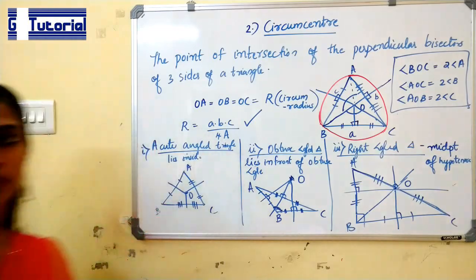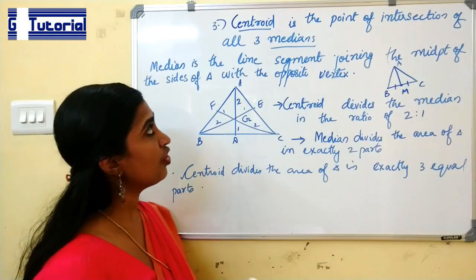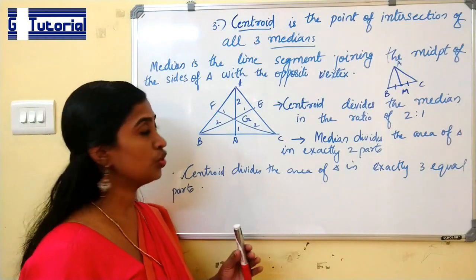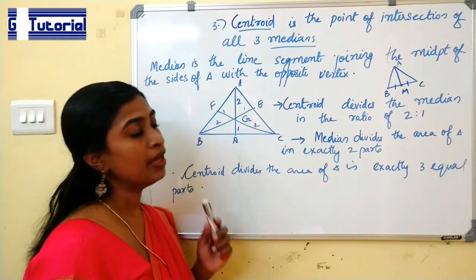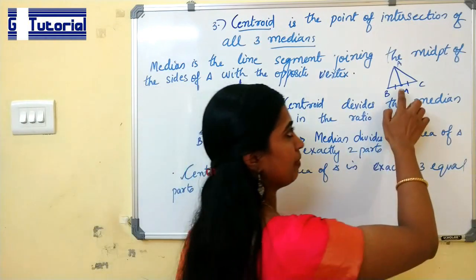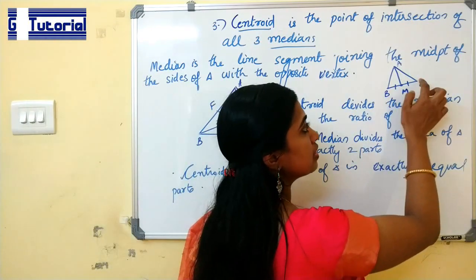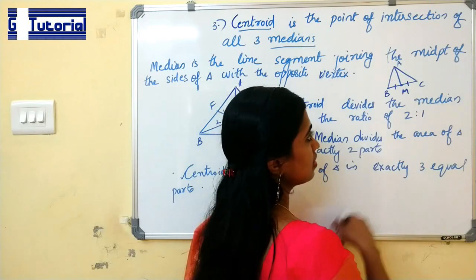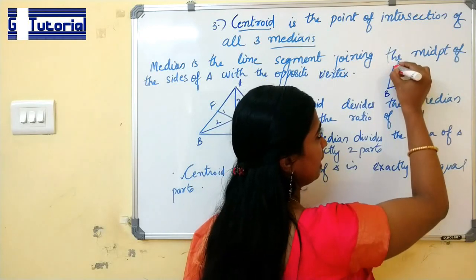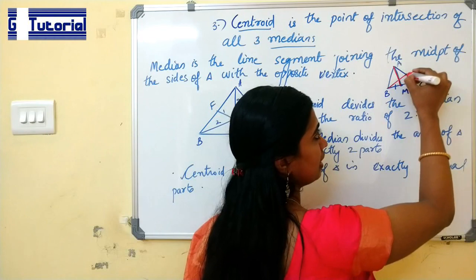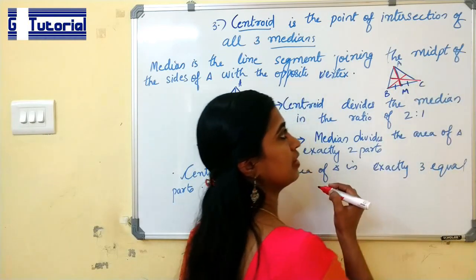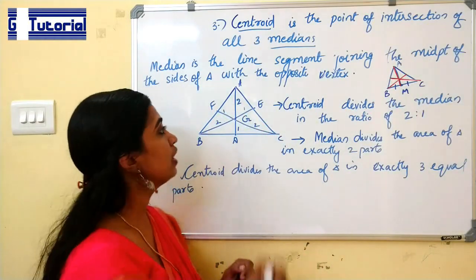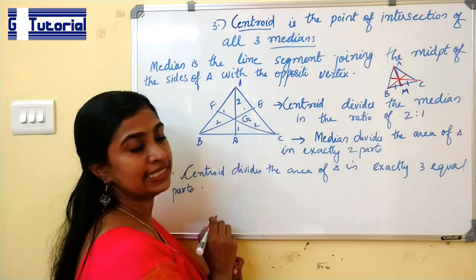Now let us move on to the next topic: centroid. Centroid is the point of intersection of all three medians. Median is the line segment that joins the midpoint of a side with the opposite vertex. The point of intersection of all three medians is called the centroid. It is denoted by the letter G.